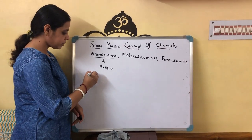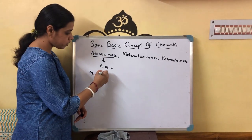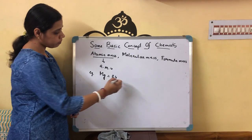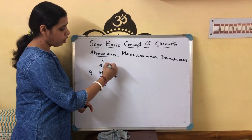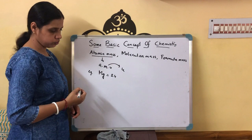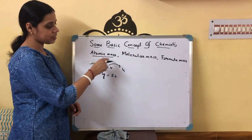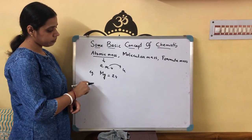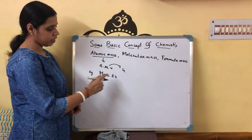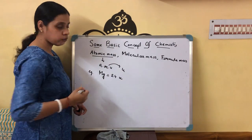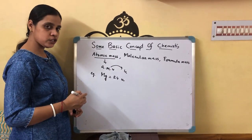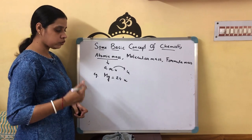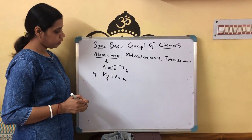For example, if we take magnesium — you know magnesium has atomic mass 24. You can either write AMU or you can write U also. This AMU is now changed to U, and this U is called unified mass. So in the case of magnesium, we can write atomic mass of magnesium is 24 U.